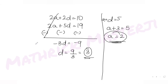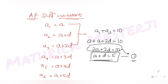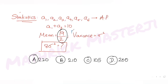The arithmetic progression becomes: 2, 5, 8, 11, 14, and 17. These are the six terms of the arithmetic progression. Now, with these six terms, we use the formula for variance.